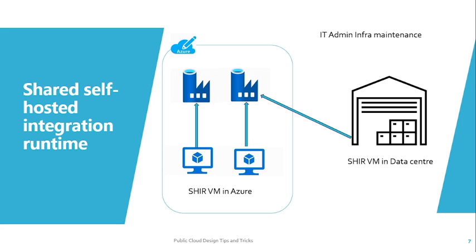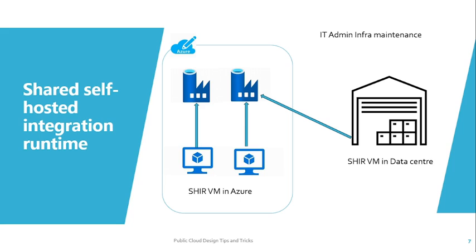With shared SHIR, you can have one virtual machine where you install your integration runtime, and link multiple Data Factories to use it efficiently. The IT admin maintenance reduces significantly — they only need to maintain one server where the self-hosted integration runtime is installed. You can also distribute the load across the Data Factories, for example running copy activities at night for one and in the morning for another. Cost is also reduced because you shrink from 20 virtual machines down to one. These are all the benefits of sharing the integration runtime across Data Factories.